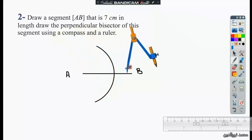Using the same opening, we put the dry point or the needle of the compass on the extremity B, and then we draw the other arc from the other side, or arc of center B.